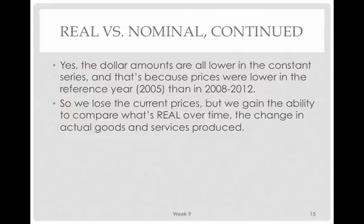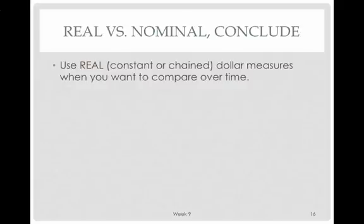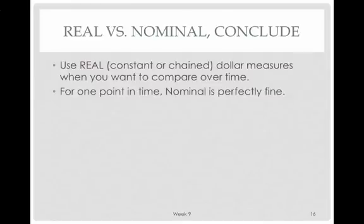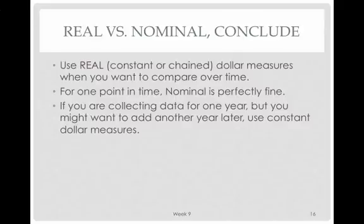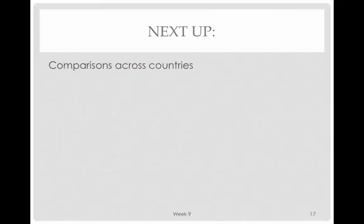The dollar amounts are lower because all prices were lower in 2005, but we don't really need to know what people paid — what we're interested in is the real change in goods and services produced, which is why we prefer the real series. So what should you use? Any time you need to compare over time, use the real series. For one point in time, nominal is fine. However, if you're collecting data for a project and starting with one year, just in case you might want to add another year later, it's a good idea to use constant dollar measures. Look for measures that are constant. Next up: comparisons across countries.